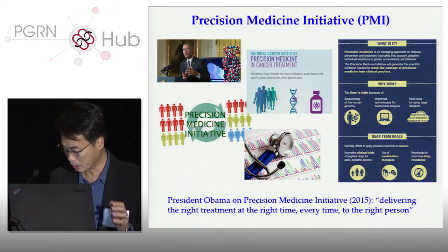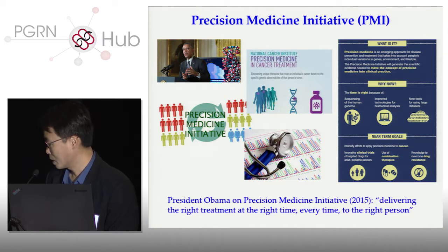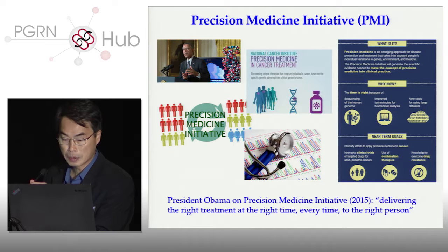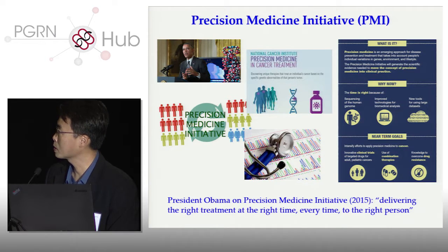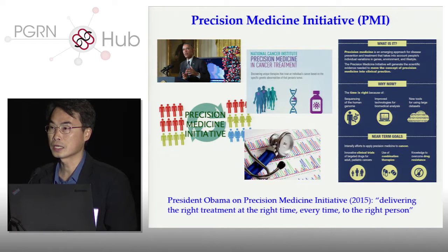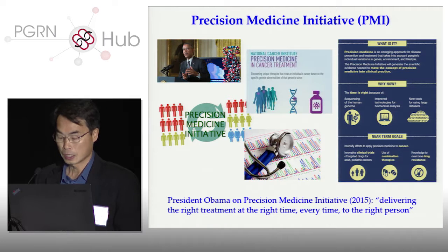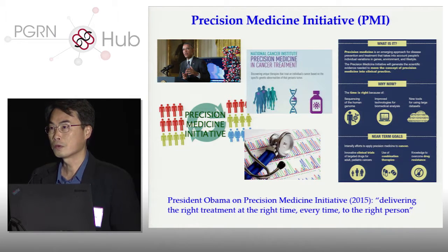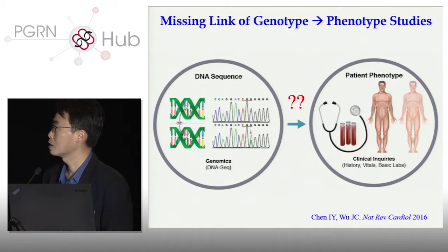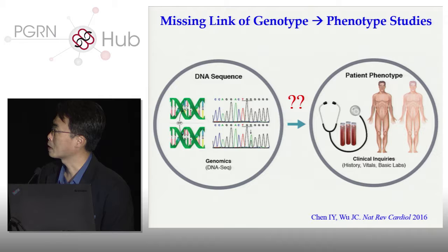Most of us have heard about the Precision Medicine Initiative, which as President Obama says, is trying to deliver the right treatment at the right time, every time to the right person. A lot of the PMI initiative has traditionally been focused on cancer genetics, trying to understand the genetics of cancer and therefore coming up with targeted therapy. For other diseases, for example cardiovascular diseases, I would argue it's actually much more difficult, as shown by this slide. It's much harder just by DNA sequencing the patient to predict what's going to happen.